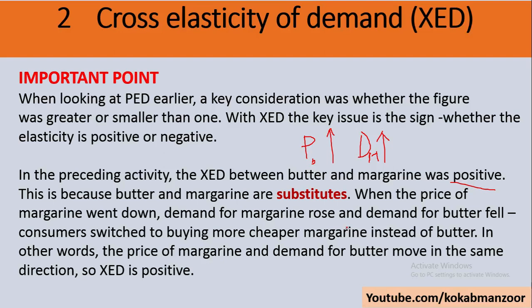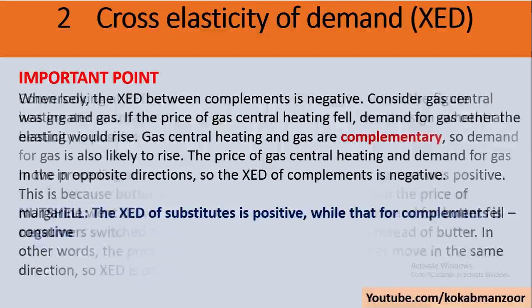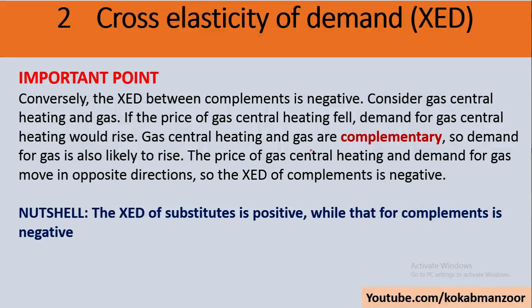In the case of complementary goods, the cross elasticity is negative. If the price of a car increases, demand for the car decreases, and hence petrol demand also decreases — an increase in price leads to a decrease in demand for the complementary good, showing a negative relationship. For example, central gas heating systems and gas are complementary goods; the cross elasticity for substitutes is positive and for complementary goods it is negative.